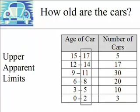The values 2, 5, 8, 11, 14, and 17 are the upper apparent limits for each class interval.